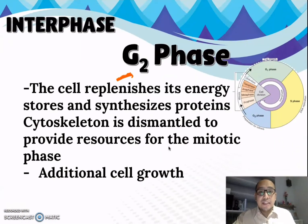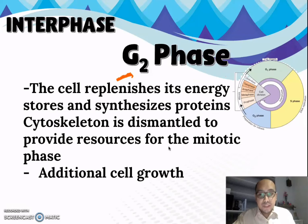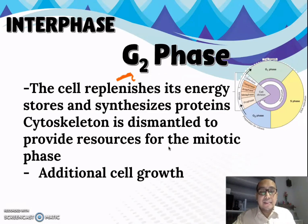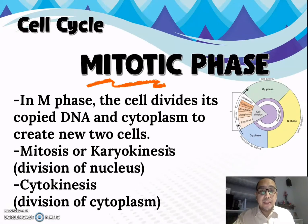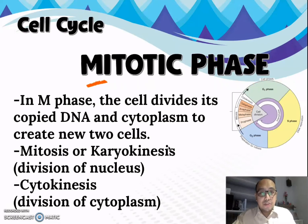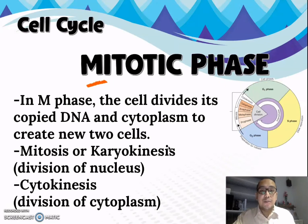For the third phase, the G2 phase or second gap phase, the cell replenishes its energy stores and synthesizes proteins. The cytoskeleton is also dismantled to provide resources for the mitotic phase, and there is additional cell growth. For the M phase or mitotic phase, the cell divides its copied DNA and cytoplasm to create new cells, involving mitosis — or karyokinesis, meaning division of the nucleus — and cytokinesis, meaning division of the cytoplasm.